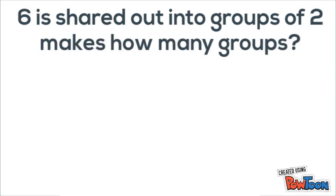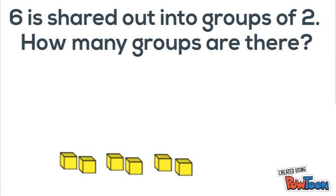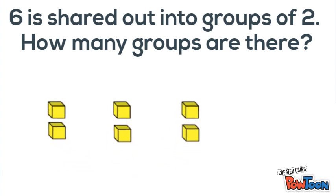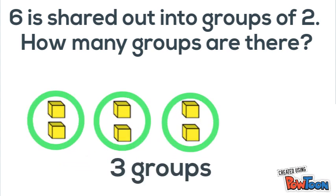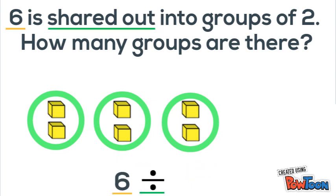Last example. Six shared out into groups of two makes how many groups? So we start with six and then we share that six out into groups of two and we see how many groups are made. When we do that, we see three groups. So we know six divided by two equals three, because division is the same as sharing out.